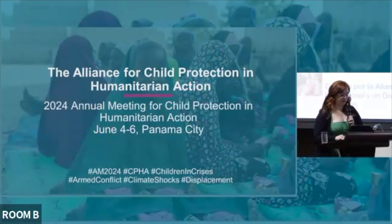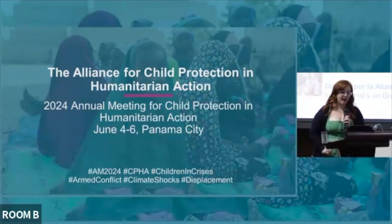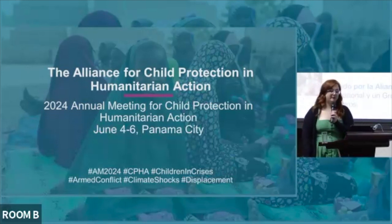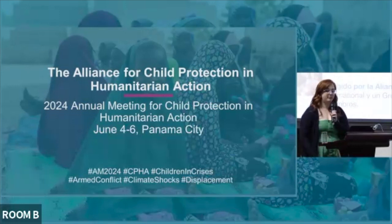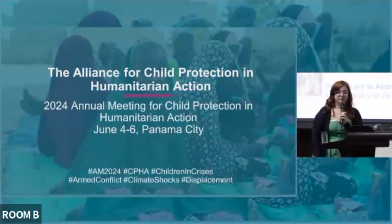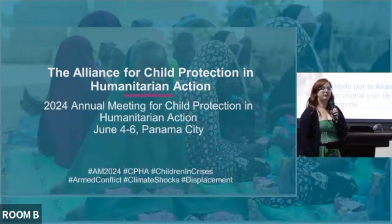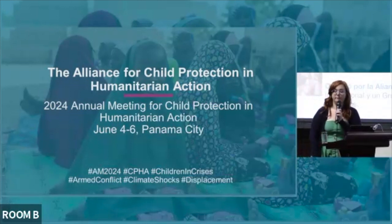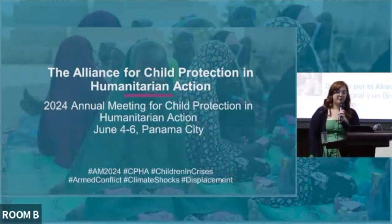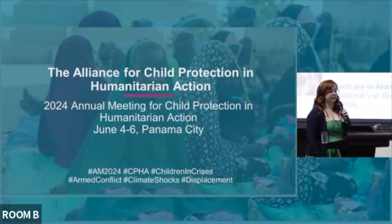So what is the Prevention Initiative? Prevention was identified as a secondary priority in the Alliance strategic plan from 2018 to 2020, and it became one of the four main priorities in the Alliance strategy for 2021 to 2025. The Prevention Initiative officially started in 2020, thanks to funding from both the Bureau for Humanitarian Assistance and PRM. The aim of the initiative was to promote increased understanding and prioritization of efforts to prevent harm to children in humanitarian settings.